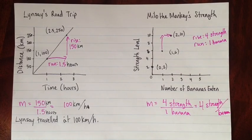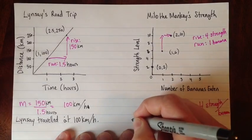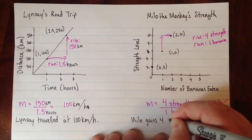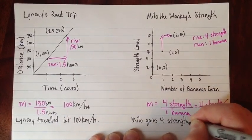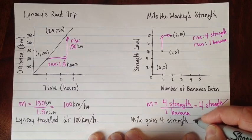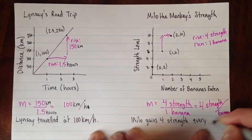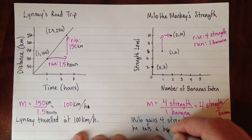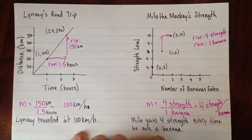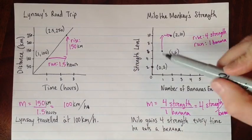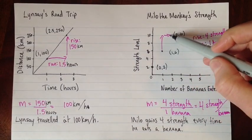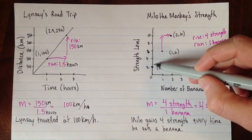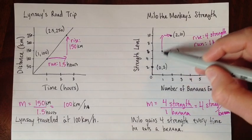So what this tells us is that Milo gains 4 strengths every time he eats a banana. And also, let's just make a quick note. These aren't connected. We haven't connected the dots here.